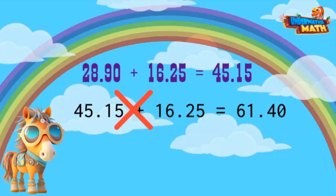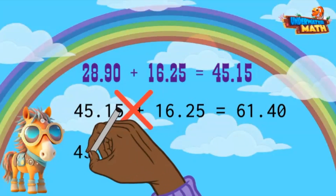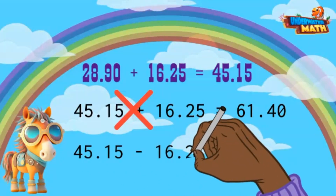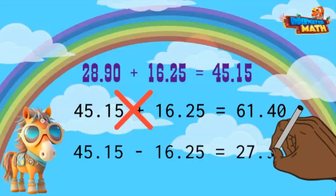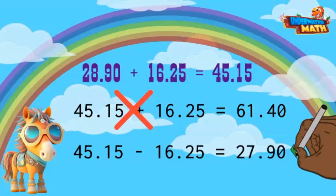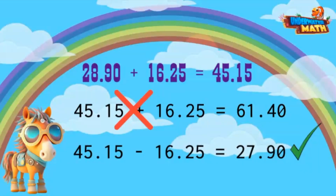I know I need to use all three numbers, but let me shuffle the numbers around and use the opposite operation. Forty-five and fifteen hundredths — the sum of the equation shown — minus sixteen and twenty-five hundredths equals twenty-seven and ninety hundredths. That's the equation that shows the relationship. Take a good look at what you've learned here, then get to trailblazing!